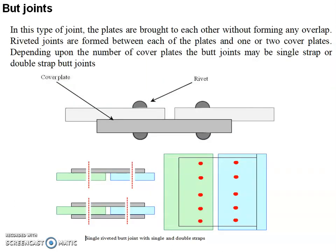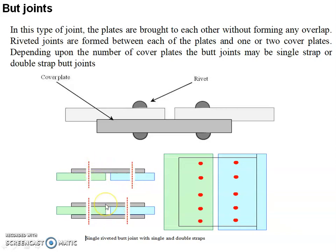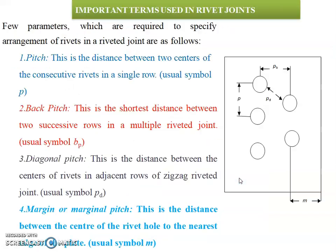In a butt joint, the plates are brought into contact with each other without forming any overlap. The riveted joint is formed between each of the plates and one or two cover plates. Depending on the number of cover plates, the butt joint may be a single strip or double strip butt joint.